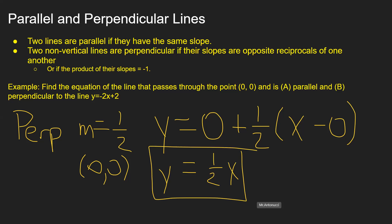If you graphed this line with the original in a square viewing window, you would see they intersect at a 90-degree angle.